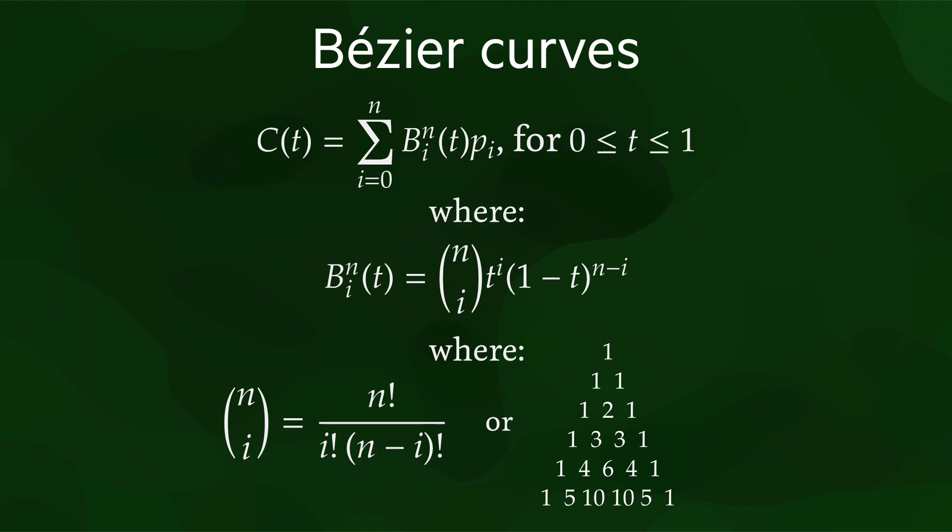You might be familiar with binomial coefficients if you've ever done statistics, since they are related to numbers of choices in combinatorics. Now, looking at the third equation, we see how formally n choose i can be computed as n factorial divided by i factorial times n minus i factorial. However, in practice it is easier to just take the correct row of Pascal's triangle based on the number of points we have in the curve.